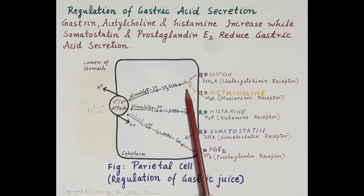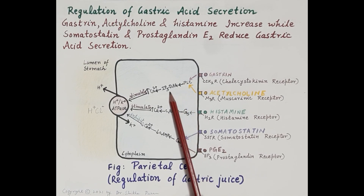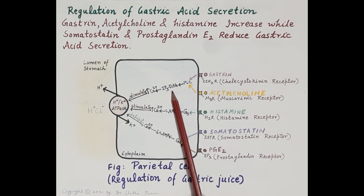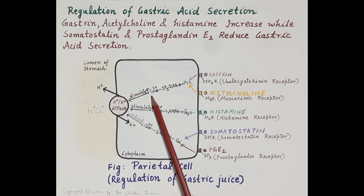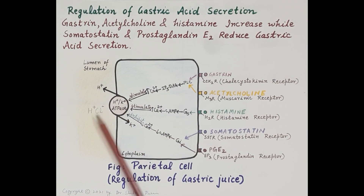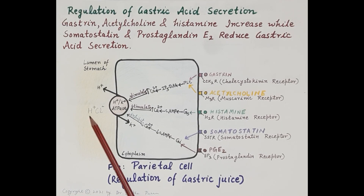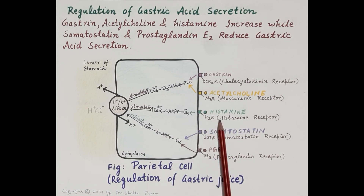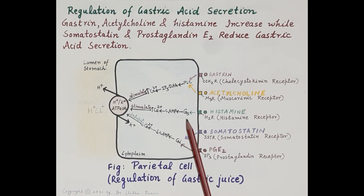Activation of phospholipase C causes an increase in inositol triphosphate and diacylglycerol, and this causes mobilization of intracellular calcium. The increase in intracellular calcium causes activation of the hydrogen-potassium ATPase pump, thereby stimulating the release of hydrochloric acid.